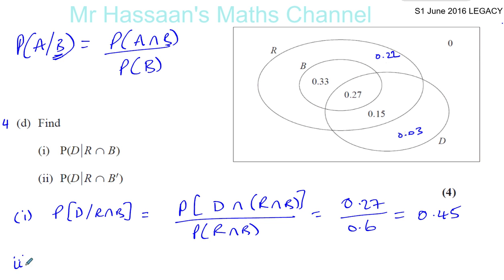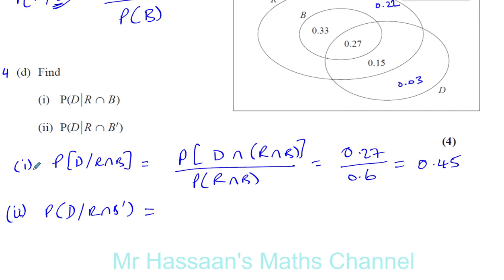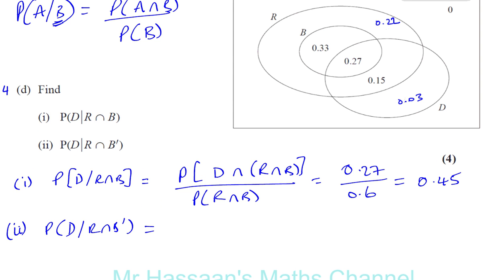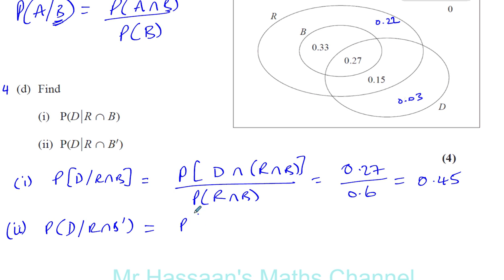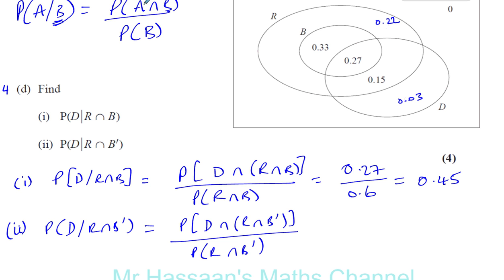And part 2 is a similar kind of thing: the probability of D given R intersection B complement. R intersection B complement are those people who booked a room but without breakfast, so it's these over here. So we're going to find the probability that someone booked dinner given that they took a room without breakfast. This equals the probability of D intersection R intersection B complement, over the probability of R intersection B complement, following this pattern.